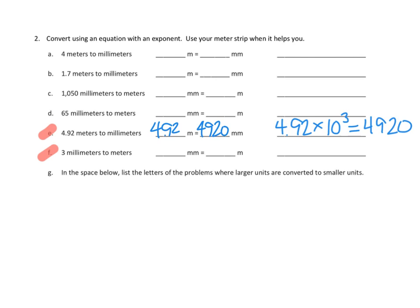Let's do problem 2F. This time we're going to go the opposite way — from the small unit to the big unit. There are a thousand millimeters in a meter. We're going to start with 3 and divide by ten to the third power. We have to move three place values to the right. One place goes to the tenths, two places to the hundredths, three places to the thousandths. So that's 0.003. Three millimeters is the same as 0.003 meters.